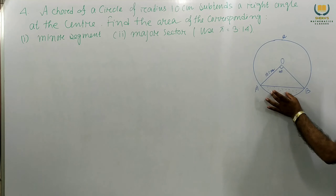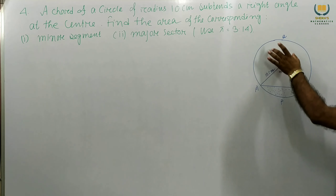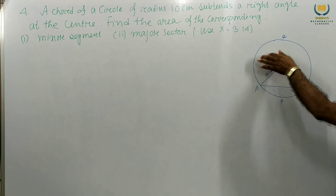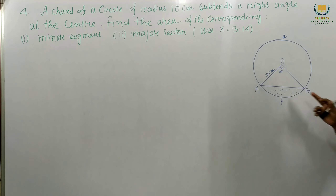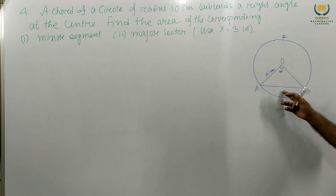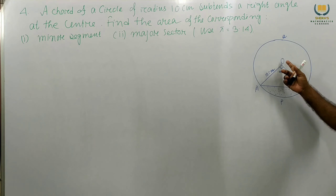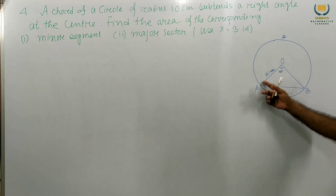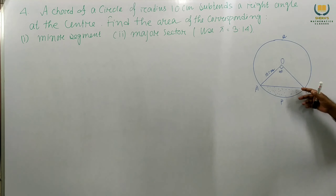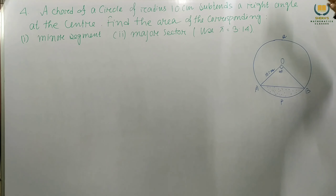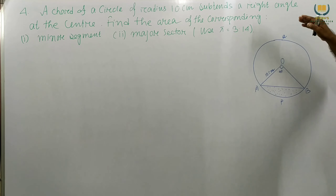First, we have to find the sector area and then this next. For finding the segment area, first we have to find the minor sector area minus the area of the triangle. Ultimately we get the required area.